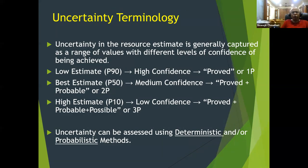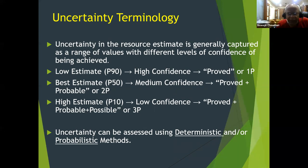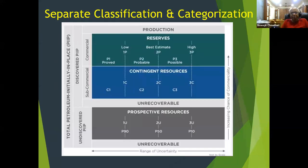Because uncertainty is intrinsic to any hydrocarbon project, we use three estimates. The low estimate is P90 — sometimes called the high-confidence or proved case. P50 is the medium-confidence case — proved plus probable. P10 is a very low-confidence, high-case estimate. If using probabilistic methods, we use P90, P50, P10. If using deterministic methods, we use low-case, best-case, and high-case estimates.